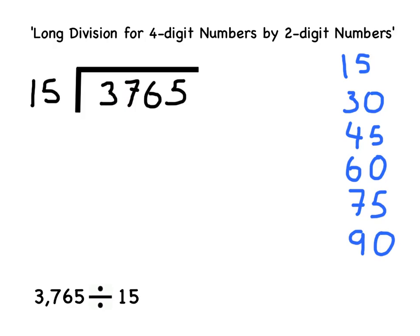I can see in my list of multiples that there are two 15s in 30. Using my place value knowledge I can therefore calculate that there are two hundred 15s in 3000. I can subtract this chunk that I know from 3765.